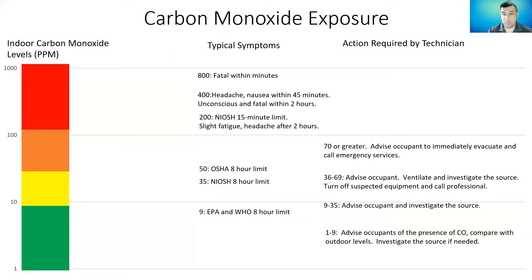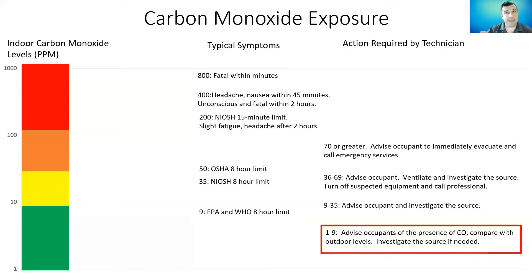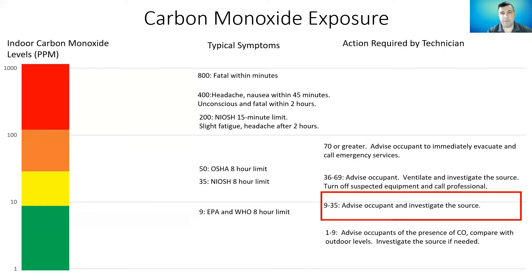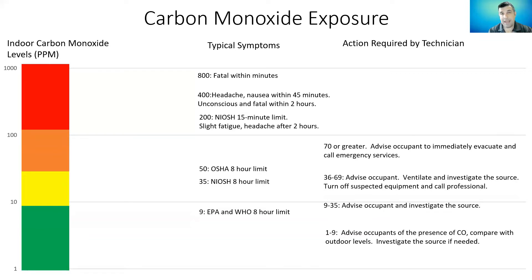At one to nine parts per million, it's best to advise the occupants of the presence of carbon monoxide and compare it with outdoor levels — maybe in an urban setting that's what it is outside, but it really should not exceed nine outside. Above nine to 35 parts per million, we definitely need to advise the occupant and investigate the source — start looking at equipment that could be the cause. Because at 35, we have reached NIOSH's eight-hour limit, and anything above that for an eight-hour period is definitely hazardous to our health.